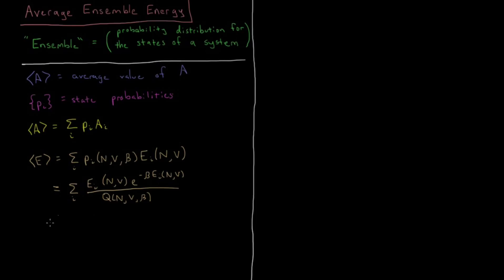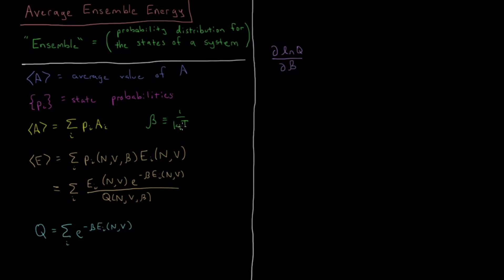I'm going to write the partition function more explicitly: Q is the sum over all states I of e to the minus β·E_I. Given this expression for average energy, I'm going to look at a particular derivative of this partition function — specifically the partial derivative of the natural log of Q with respect to the inverse temperature β, where β is defined as 1 over the Boltzmann constant k_B times the Kelvin temperature T.